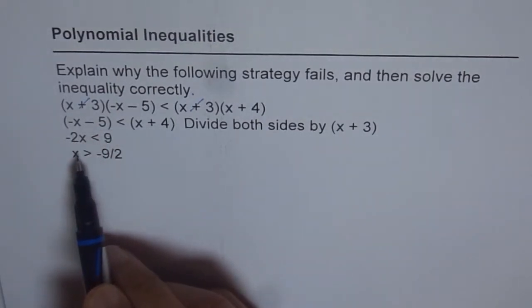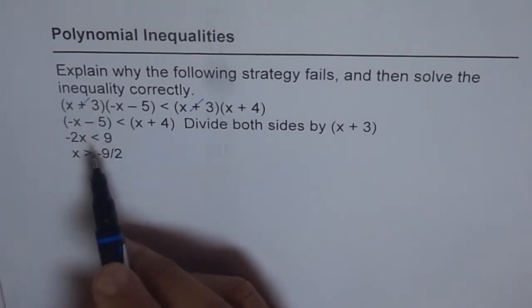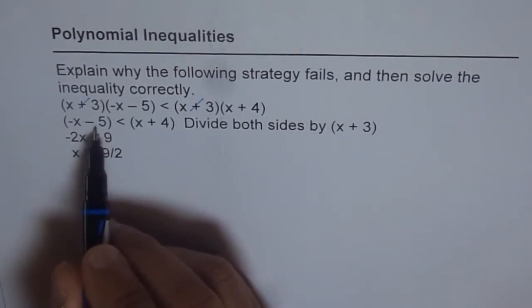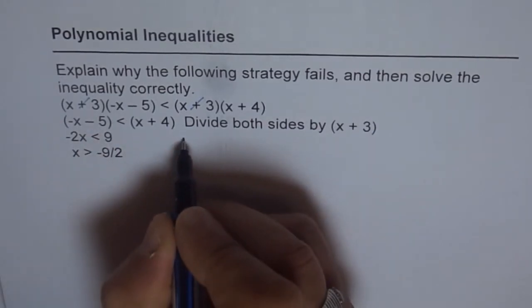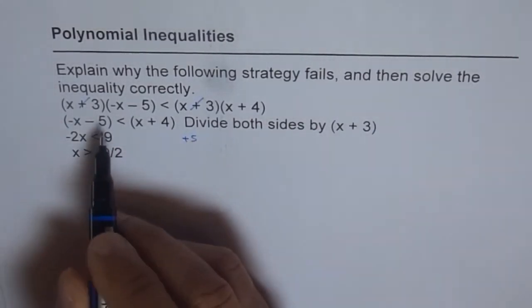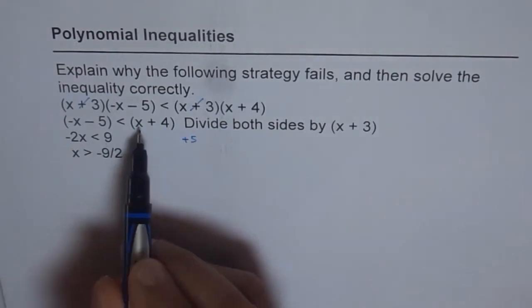And which can be solved as shown here. That is, you add 5 both sides, right? So in this stage, you are adding 5, you do plus 5 both sides and then you bring out...